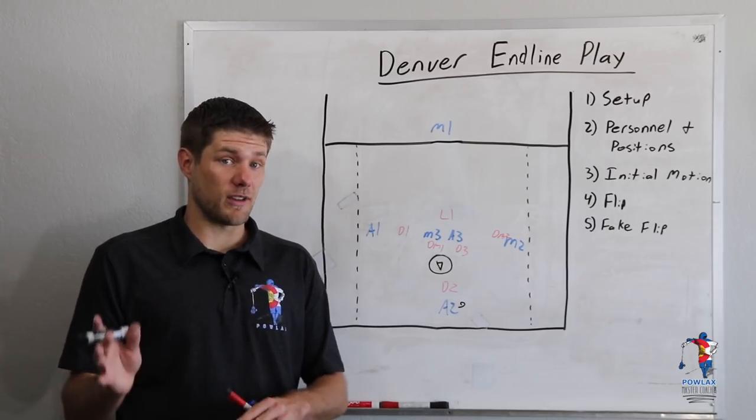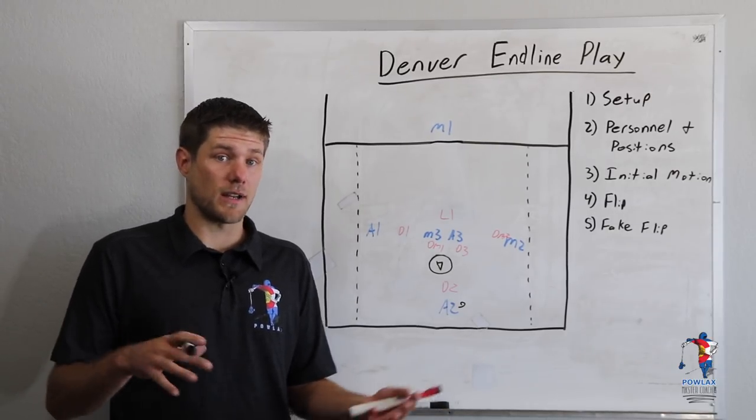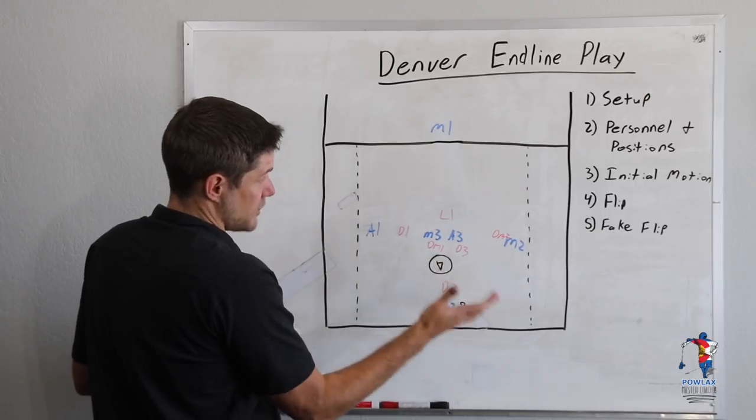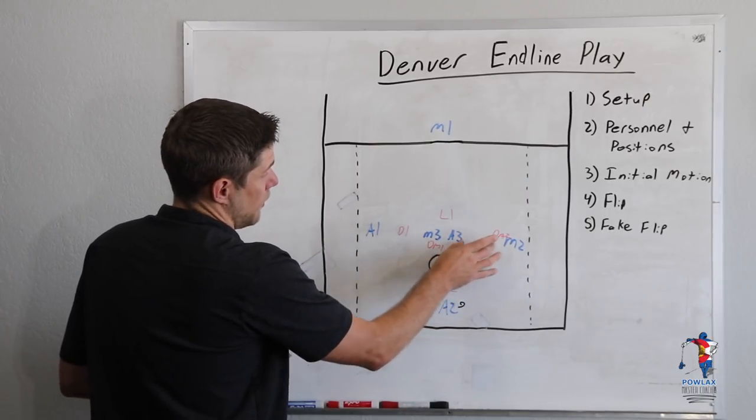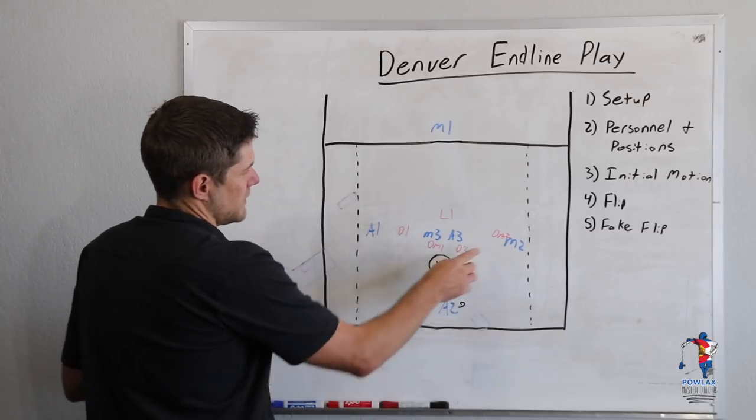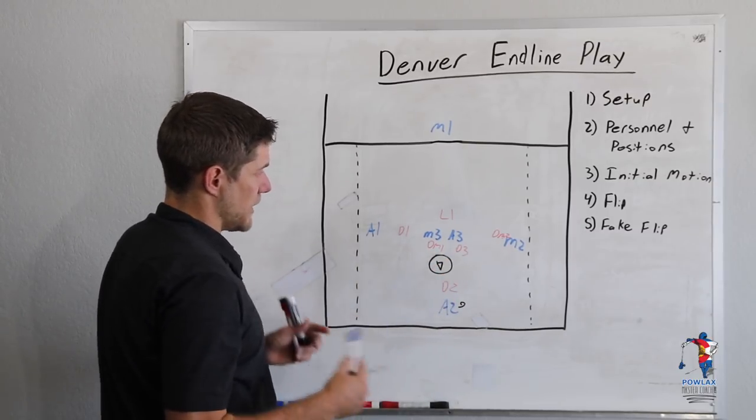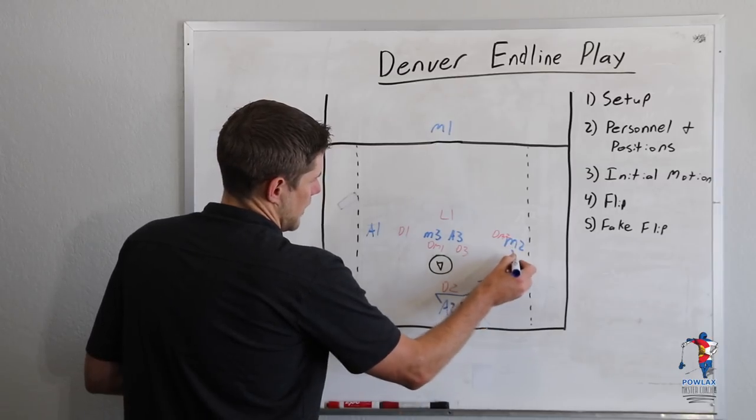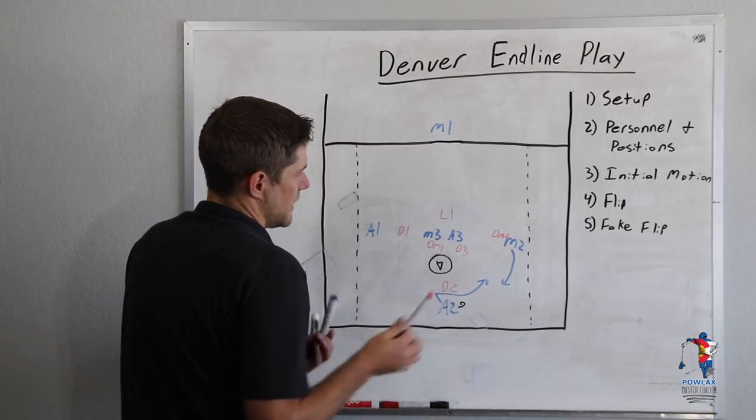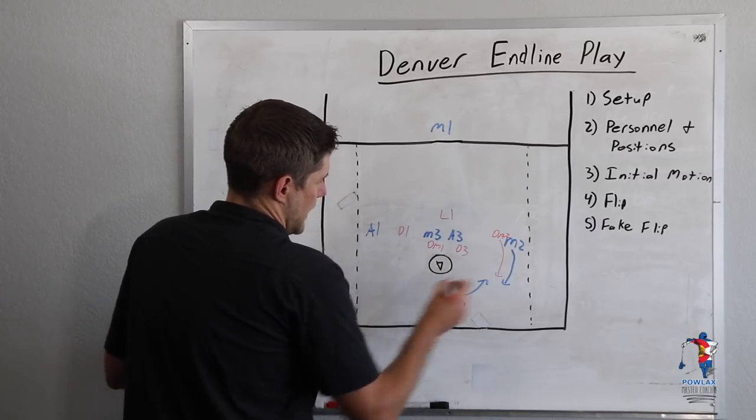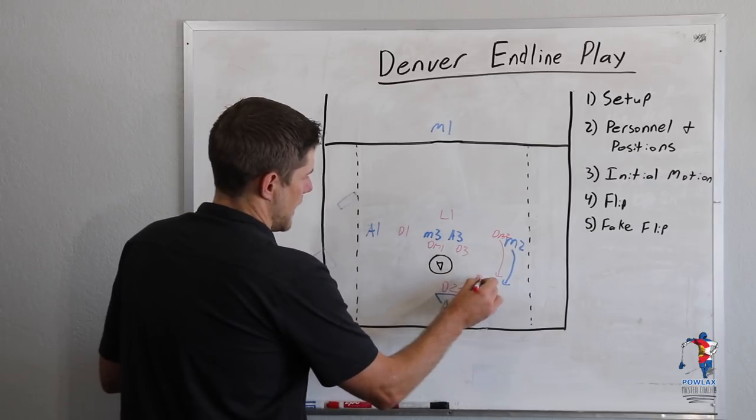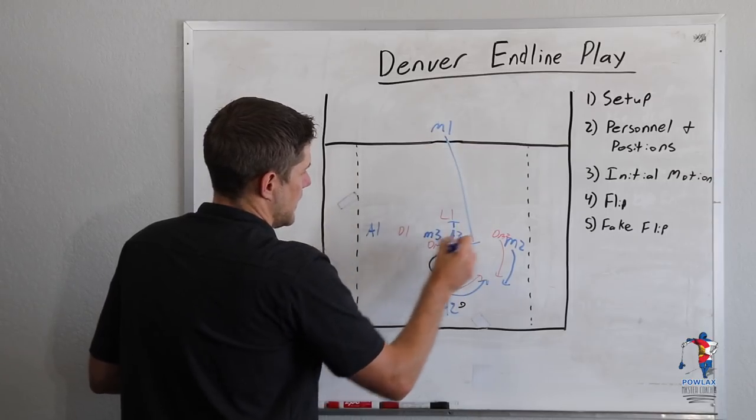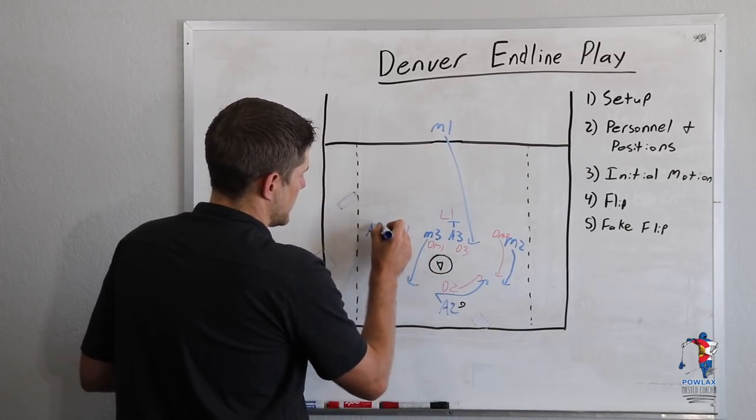So as we were running this with our high school team, one of the things that happened is people started to scout us, and they tried to destroy the play before it happened. So what they would do is they would put a lot of pressure here. Another one of the changes we had is this was always an attackman, which meant a pole was here. So one thing that they tried was they tried to lock this player off as we were going to make the flip. Everything else remained the same. So A2 dodged to his left, comes back to his right, M2 comes to get the ball, but this time DM2 would lock him off. And so because of that, we couldn't actually make the flip. So now just to add in all the other spots, A3 would set an up pick, M1 would cut, M3 would pop out to back left, A1 would cut the middle. And now because we had this locked off, we obviously couldn't throw the flip.